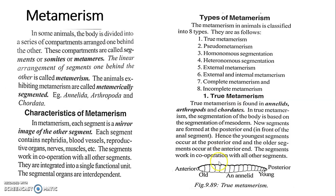New segments are formed at the posterior end. If the anal segment is present, the new segment is formed just in front of it, in the posterior region. Hence, the youngest segment occurs at the posterior end and the oldest segment occurs at the anterior end. This is known as true metamerism.